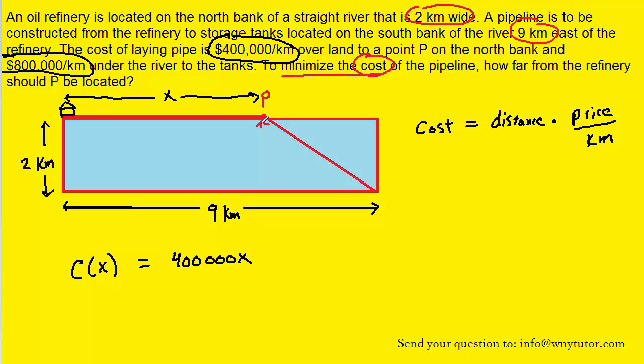Let's note that this distance here is 2 kilometers, simply the width of the river. This distance from here to here, if we look carefully in the diagram, would be the 9 kilometers subtracted by the x. That would be the leftover portion of this distance right here. So we can label that 9 minus x. Because we have a right triangle, we can use the Pythagorean theorem to find an expression for the distance across the river here.